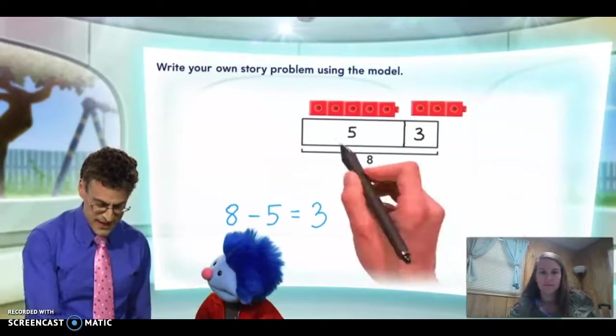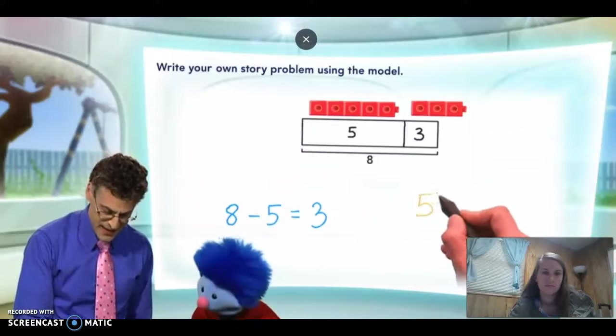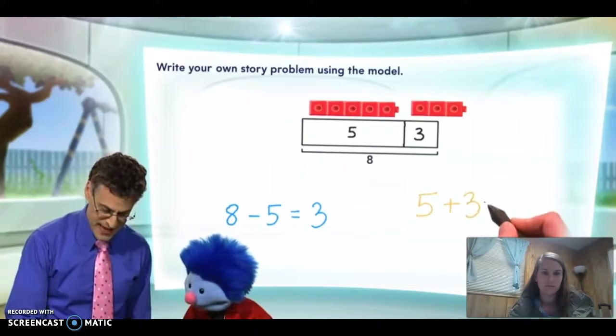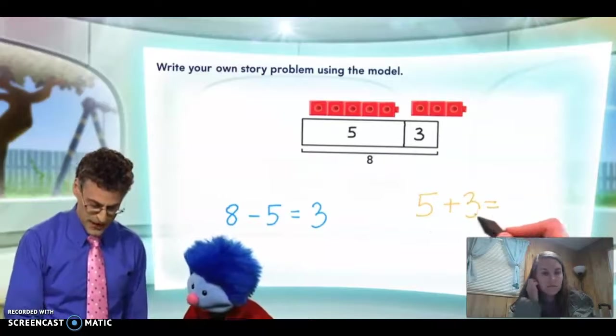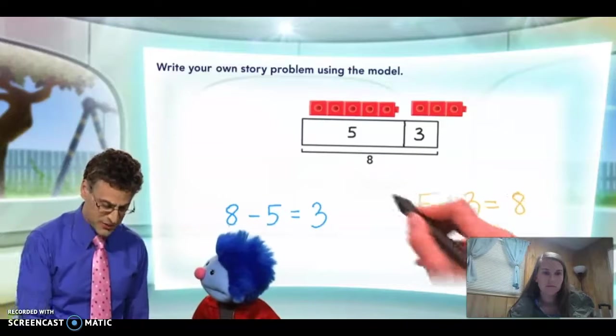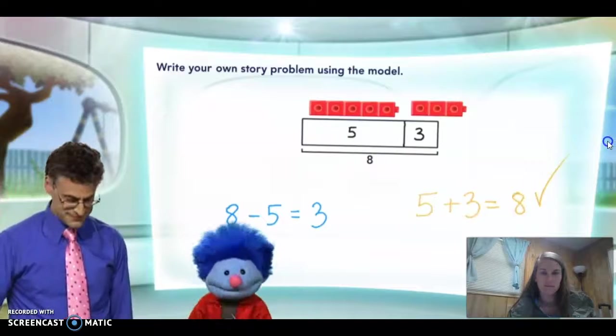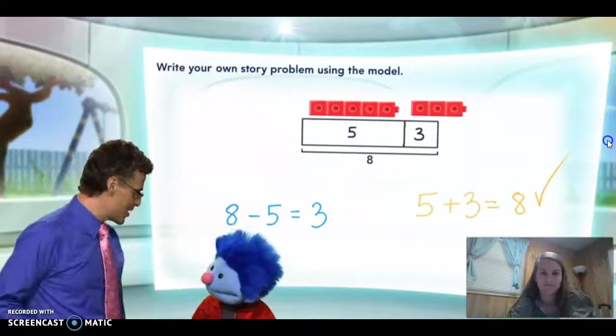And now we can even check our answer by saying, what if we took the 5 she had, and we now add back the 3 that she was left with at the end. Right, the 5 she gave away plus the 3, and 5 plus 3 is 8, and that's what she started with. So we could even check our answer. Oh, it's like telling the story in a different way. Yes, that's exactly right, Joey.